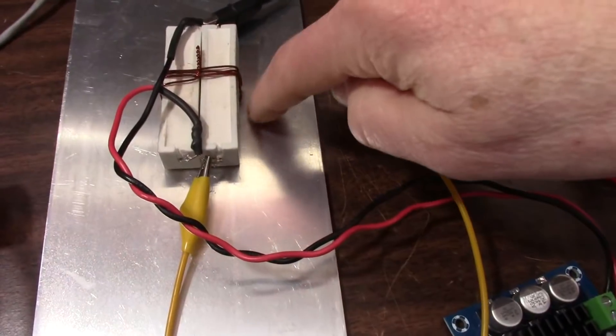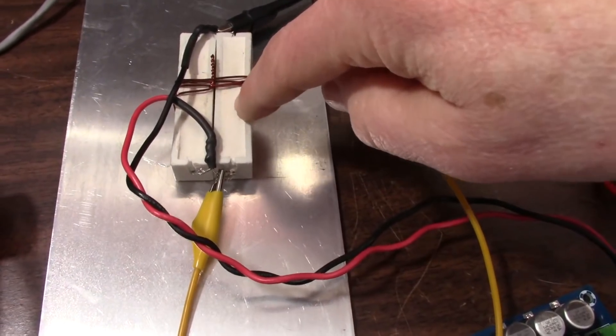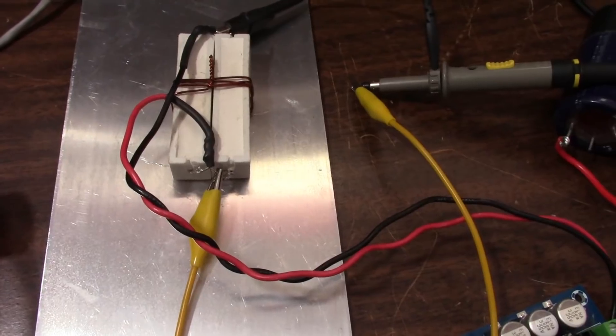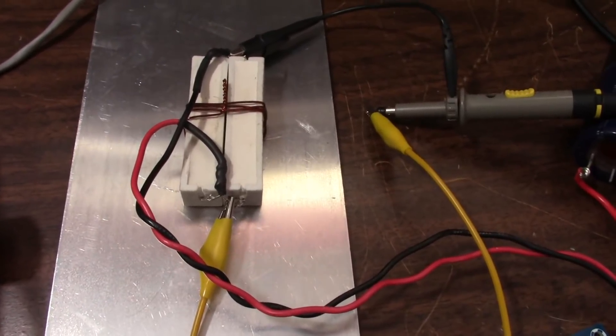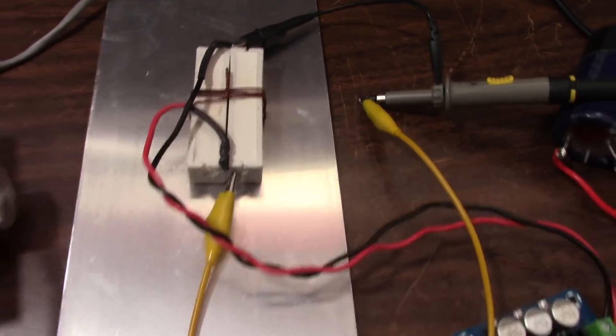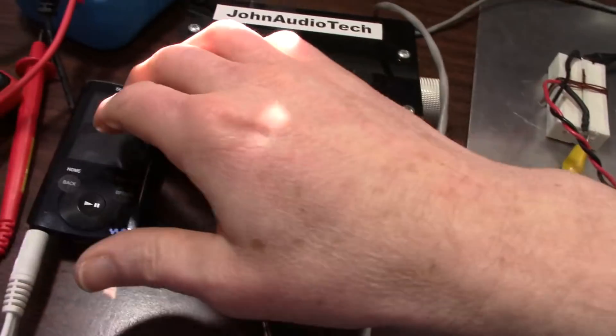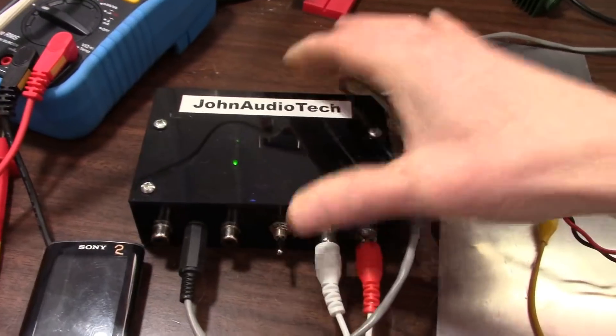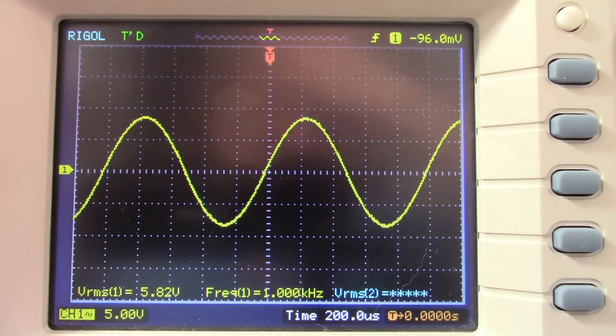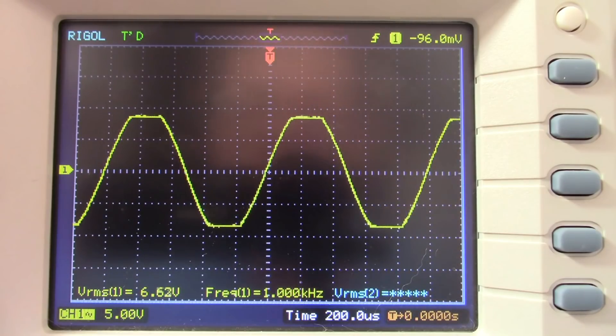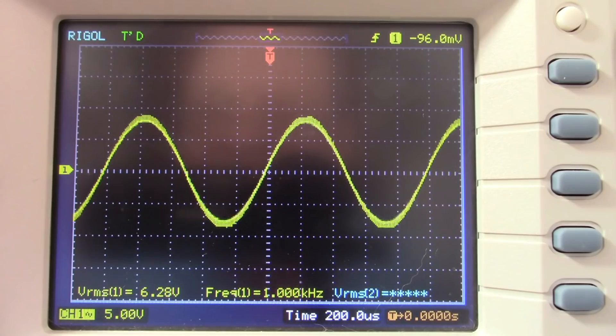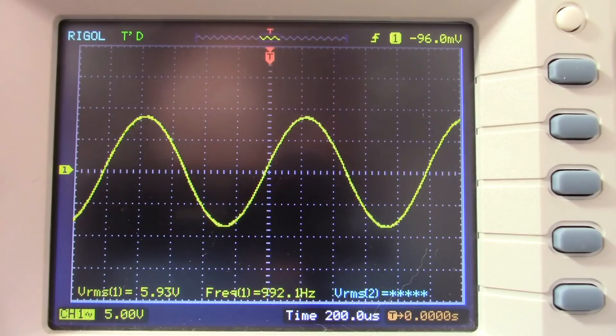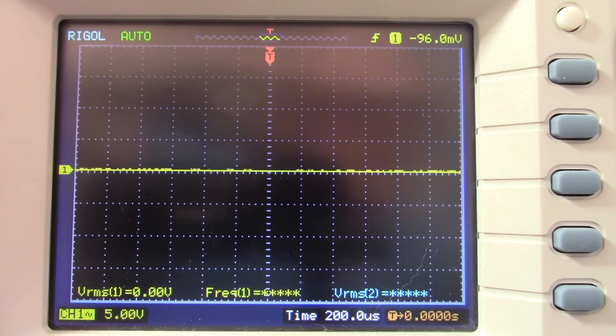So we'll start out with the 4 ohm load and see if we can beat that 51.7 or whatever watts I was getting out before. And for signal source, we'll play the sine wave tones from the music player through the preamp. Okay, we're getting a waveform here. We're only at 10 volts supply right now.